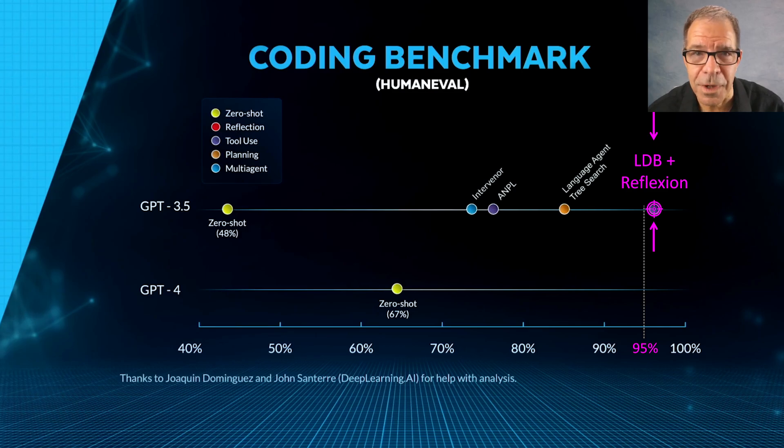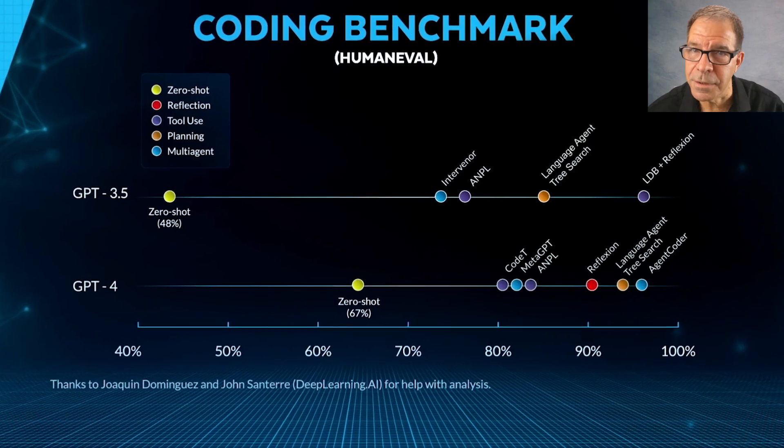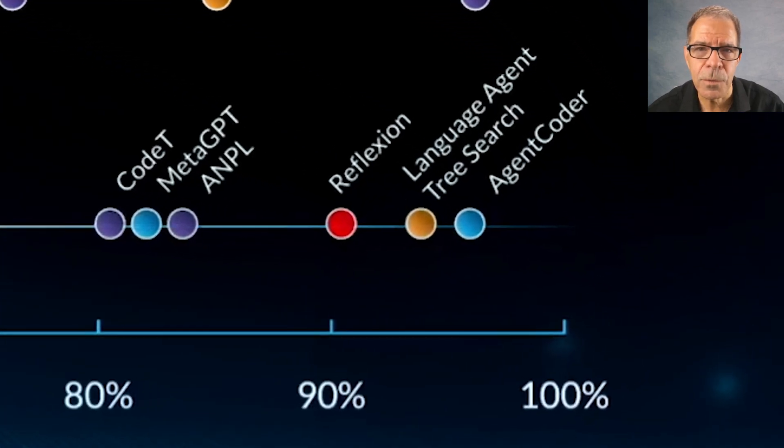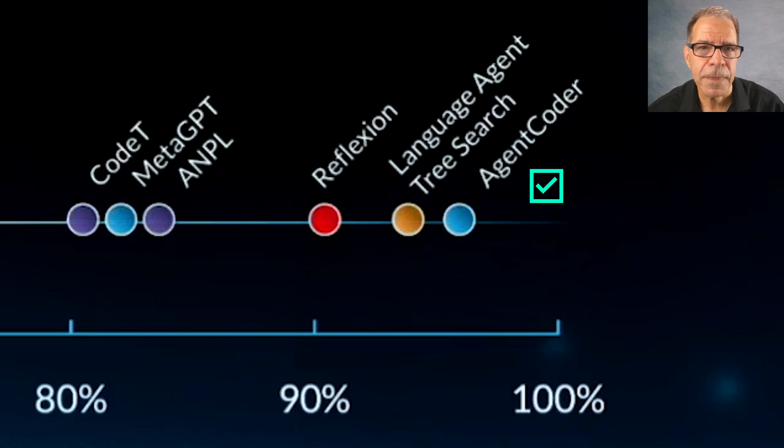Naturally, they also tried various frameworks on GPT-4 as well, which clustered a bit higher than the previous ones, as you can see here. And this time, the top model was Agent Coder, which is a framework that's similar to the one we just saw.